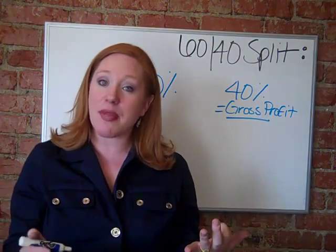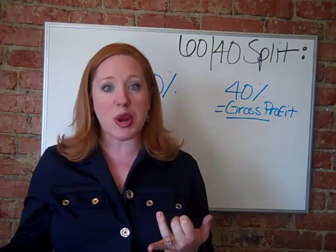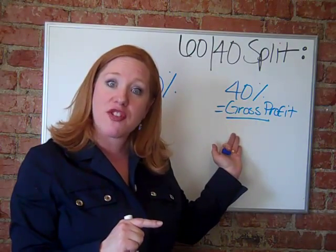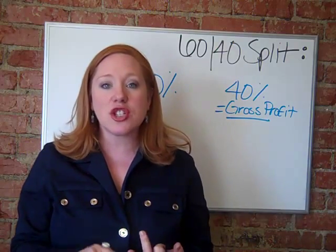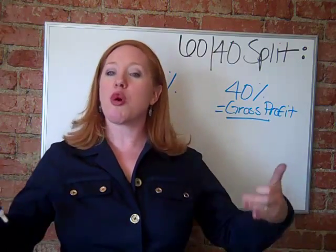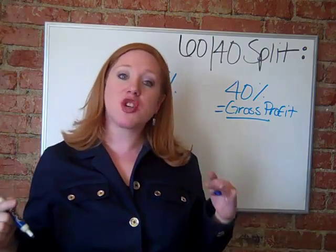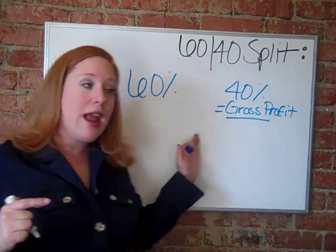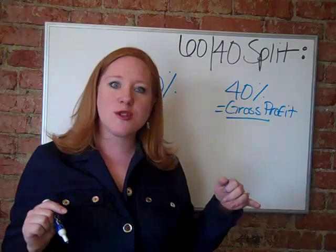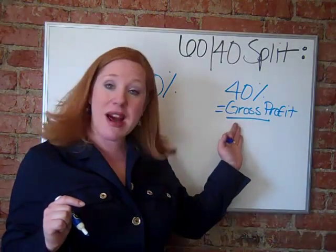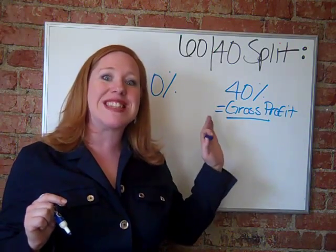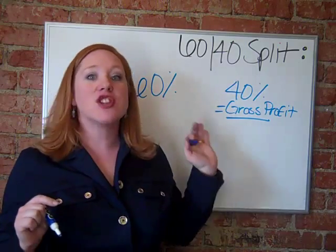For example, if you took a business loan to buy inventory at the beginning of your business, you will need to pay your business loan out of the 40% gross profit. Or if you make a decision to buy more inventory — to have a healthier, more robust inventory stock — you might choose to take some of this 40% gross profit and re-budget it for inventory. You might also choose to buy business cards for your business, and that's going to come out of this 40% gross profit.